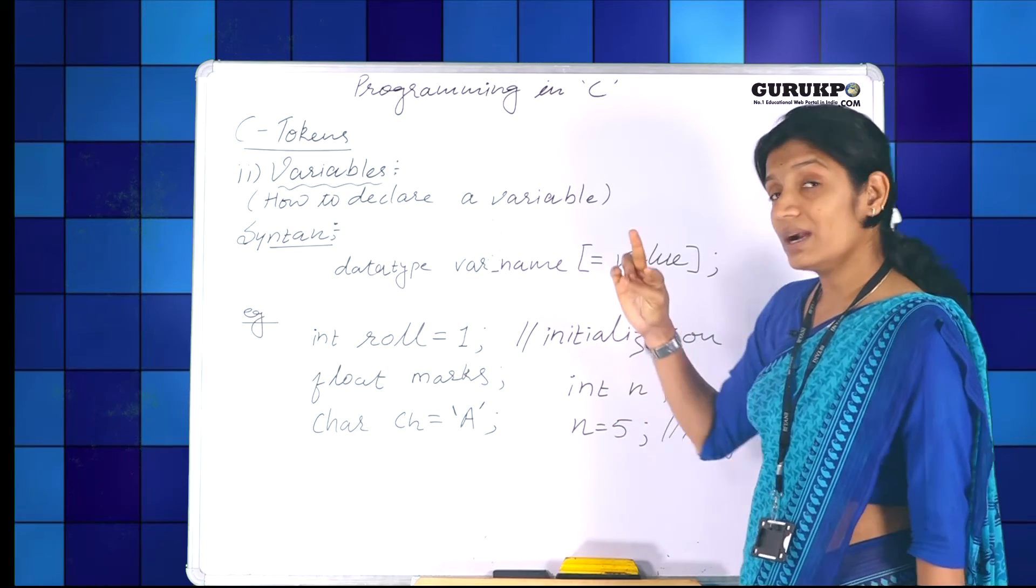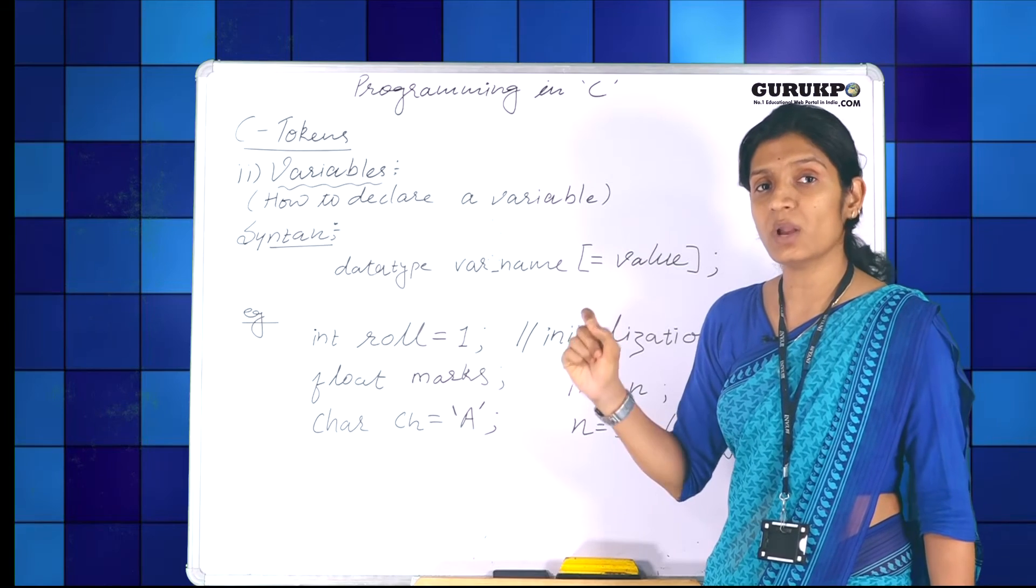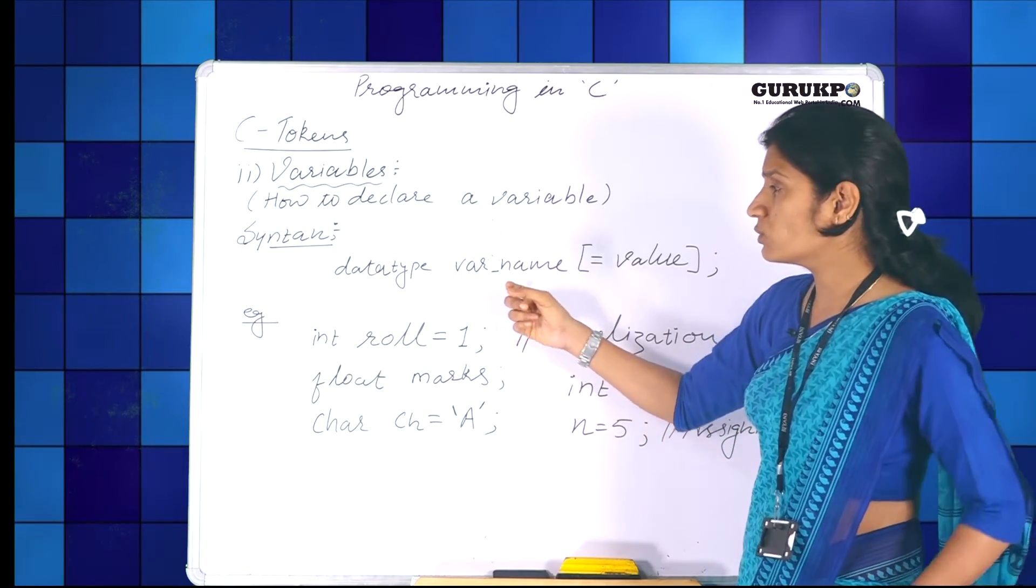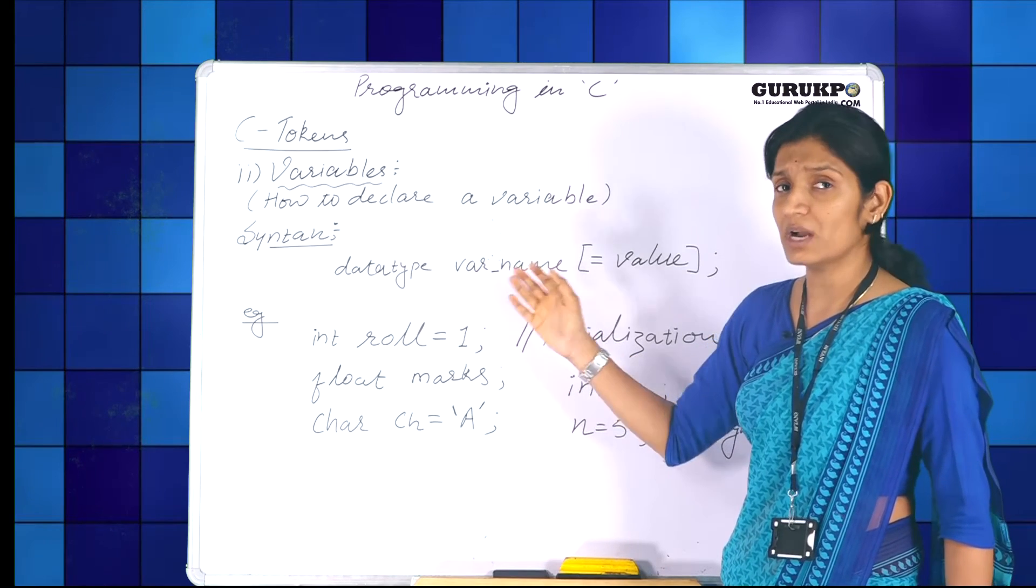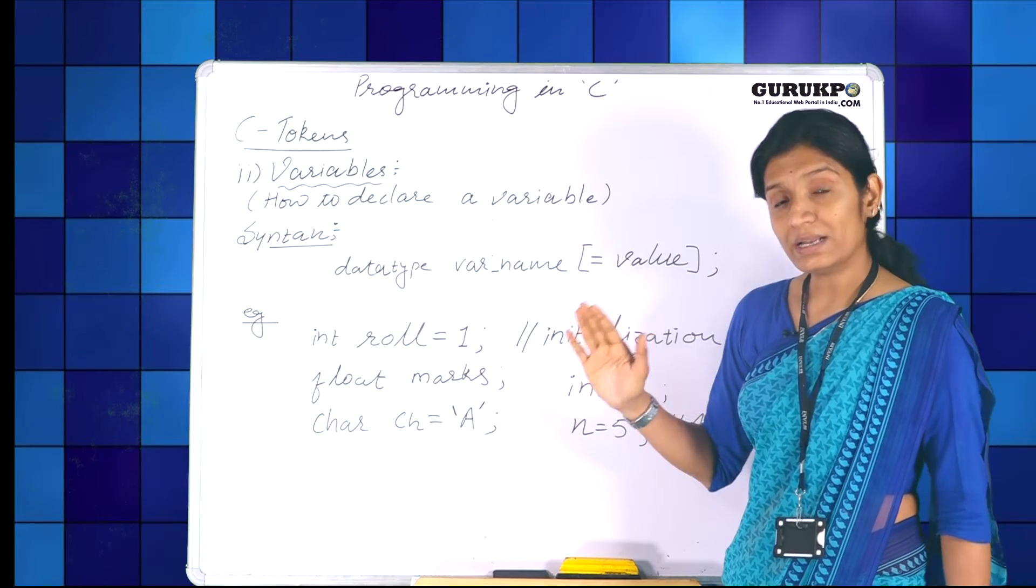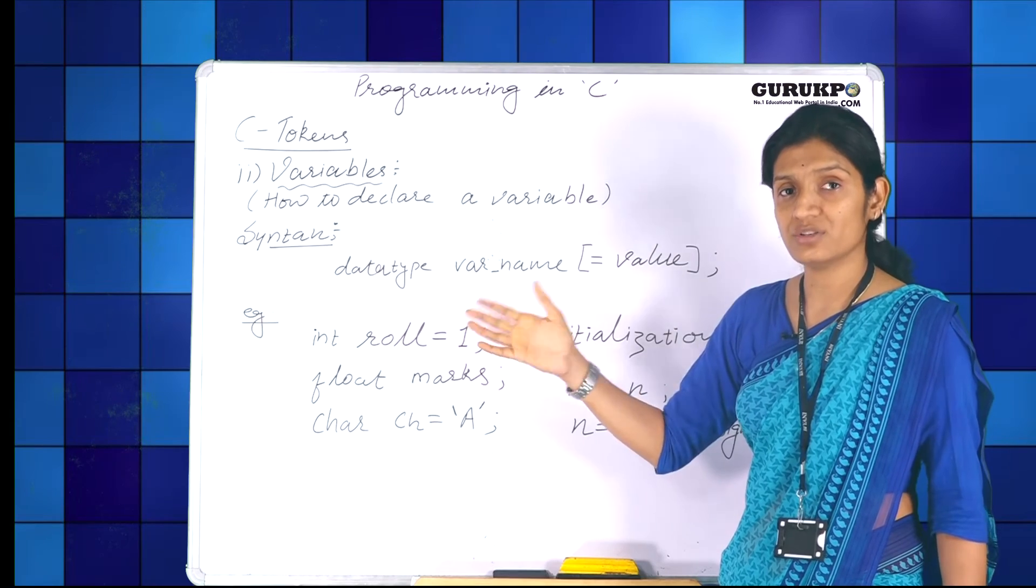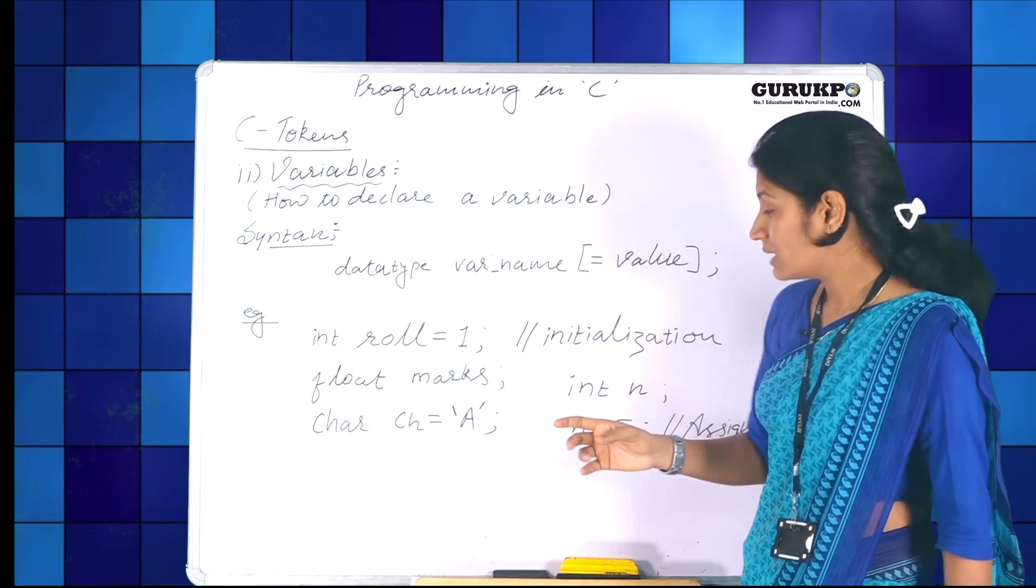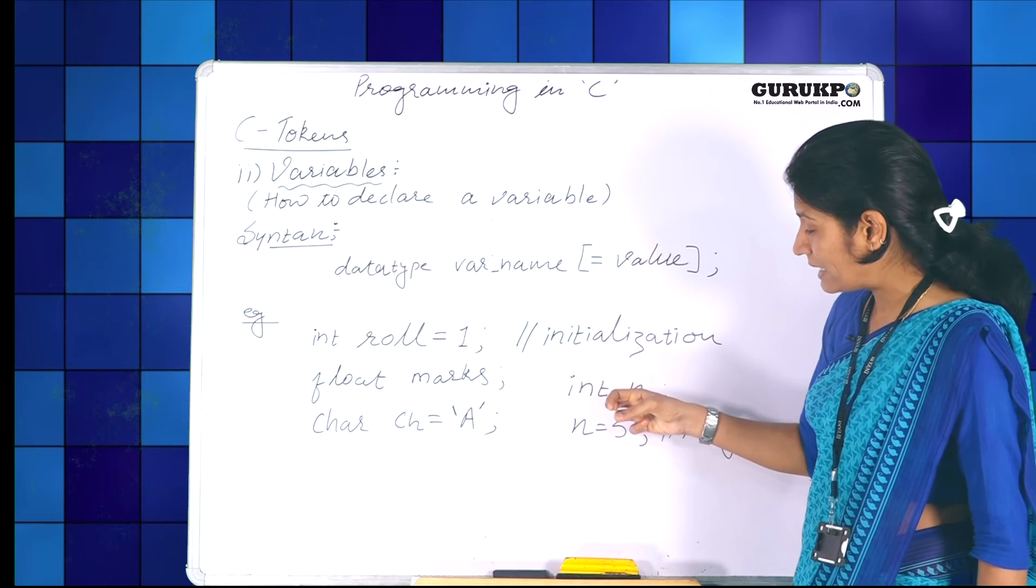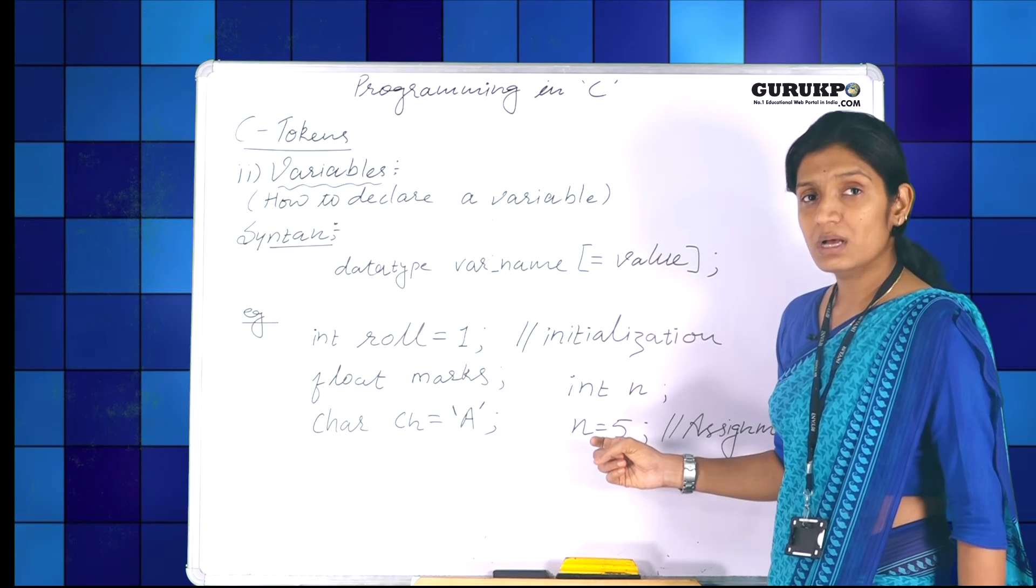Now there are two further more terms related to variables. One is initialization and one is assignment. Initialization, we have already seen. If you want to give the value at the time of declaration, that value will be initialized to the variable. This is known as initialization. And if at any later instruction or at later stage, I am giving the variable a value, then it is known as assignment. In this case, for example, I have declared int n. Later on, I am giving n a value, then this is known as assignment.